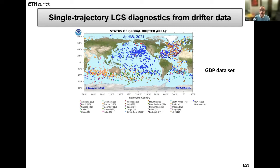We have a huge drifter array database which is being constantly developed and maintained. I took a snapshot of the global drifter project. I think you can see the date there — April 5th last year — because I was working on something and I needed it, but you can go anytime to this GDP dataset. It's a wonderful thing. It shows you the current locations and even nationalities or natural origins of these drifters in the ocean.